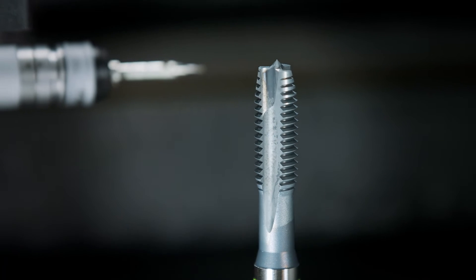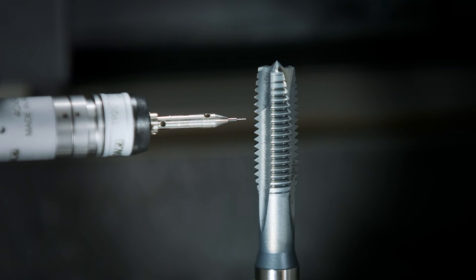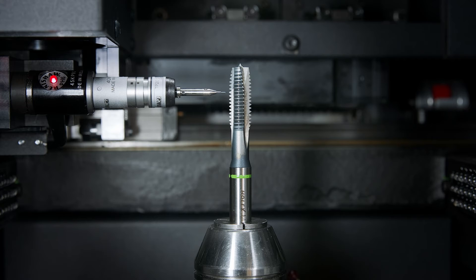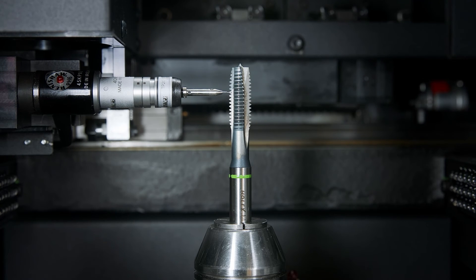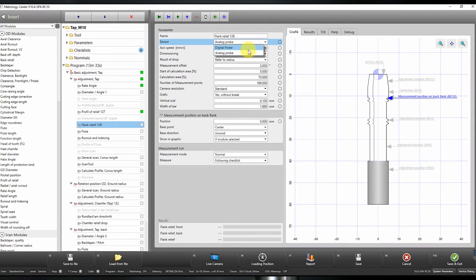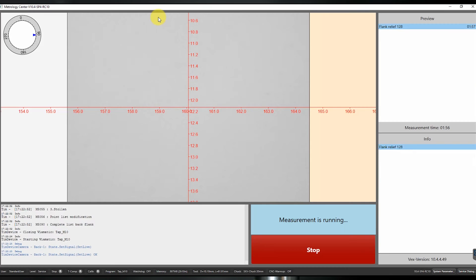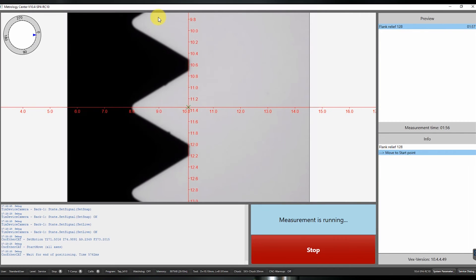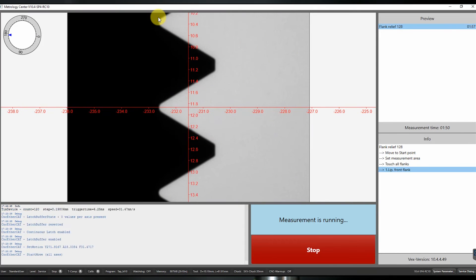Another range of tools that could not be measured comprehensively without tactile measurement technology are tools with a helix, in particular screw tapping tools. Due to the screw tap incline and the areas concealed by it, it is necessary to record and evaluate parameters such as the flank diameter with the digital touch probe.